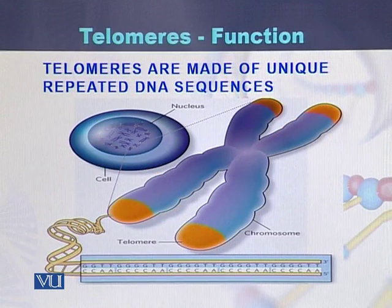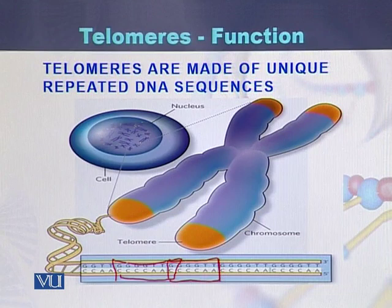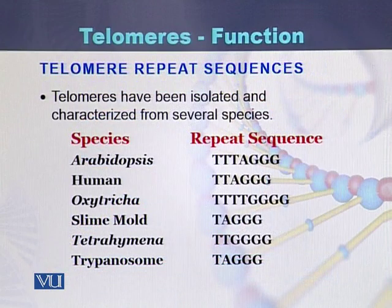Telomeres are made of unique repeated DNA sequences. In this example, we can note that there is a repeated sequence of double-G, double-G, and double-T. This sequence repeats again — double-G, double-G, and double-T — and a third time as well. It means the sequence of the telomeres is made up of specific sequences, and there is repetition of those specific sequences.